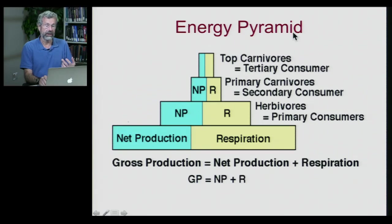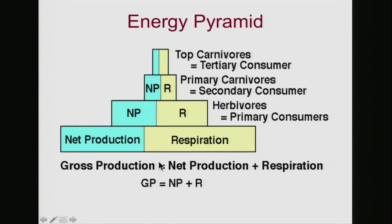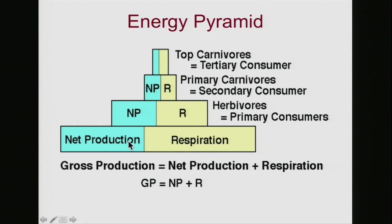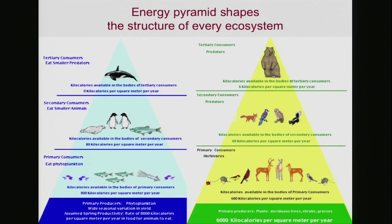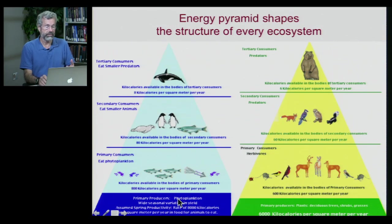This is what gives rise to what's called an energy pyramid. Plants are involved with a gross production of biological material, but that's divided into two parts: net production and respiration. You might see GP for gross production, which is the sum of those two. Remember that the only thing available for the next trophic level above is this net productivity. This shapes communities so that, whether in a marine or terrestrial system, our primary producers are by far the most abundant in the system.